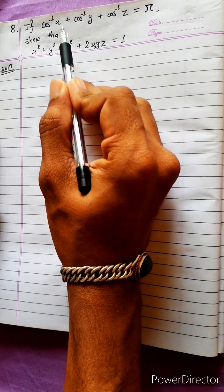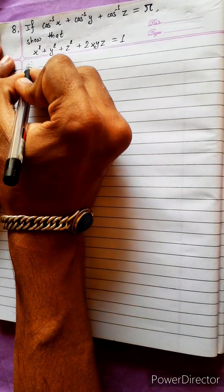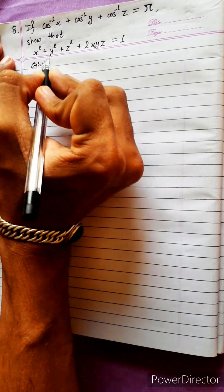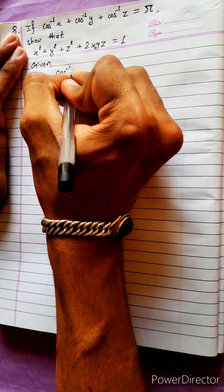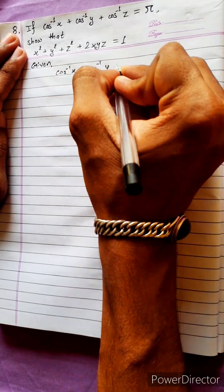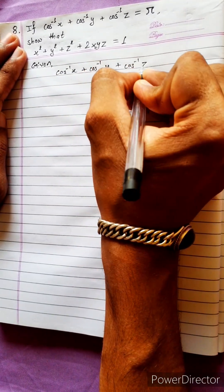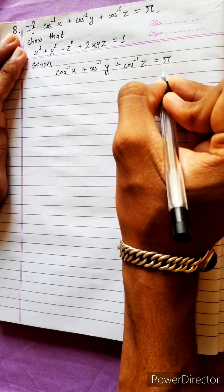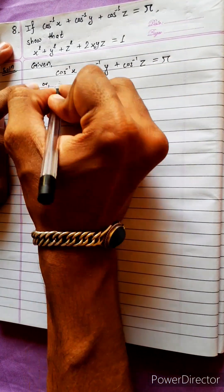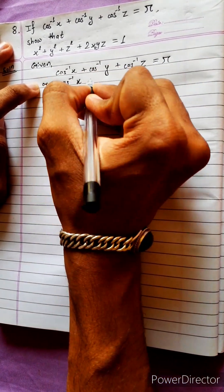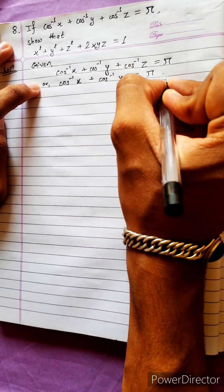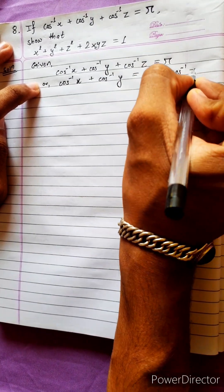Given condition: cos⁻¹x + cos⁻¹y + cos⁻¹z = π. From this, we can write cos⁻¹x + cos⁻¹y = π − cos⁻¹z.